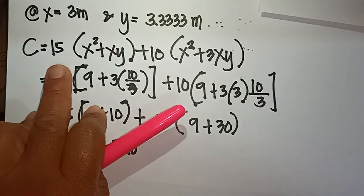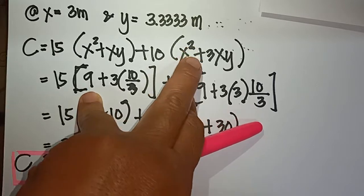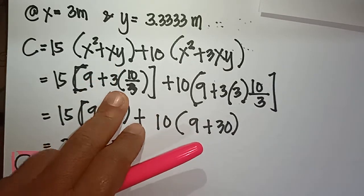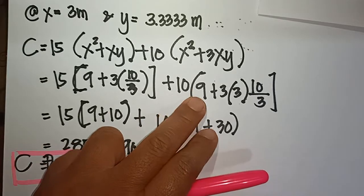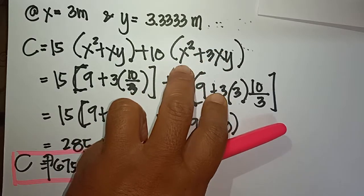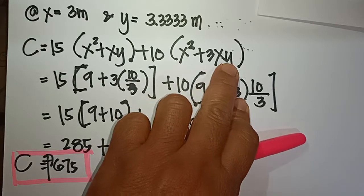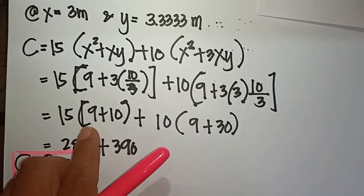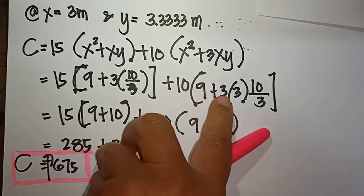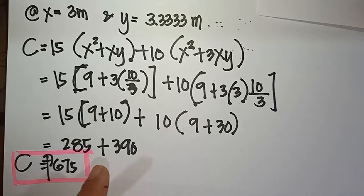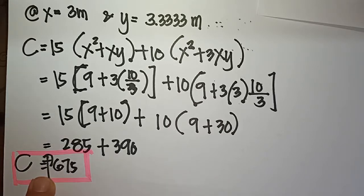Now we solve for cost using x equals 3 and y equals 10/3. Cost equals 15 times (x squared plus xy) plus 10 times (x squared plus 3xy). Substituting: x squared equals 9, x equals 3, y equals 10/3. This gives 15 times (9 plus 10) plus 10 times (9 plus 30), which is 15 times 19 plus 10 times 39, equals 285 plus 390. The minimum cost is 675.